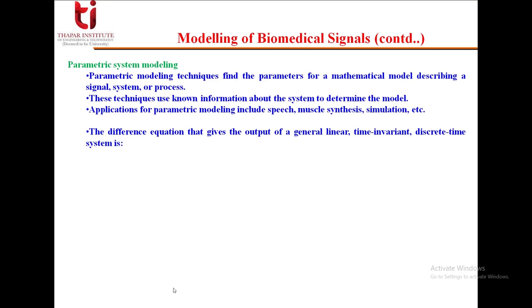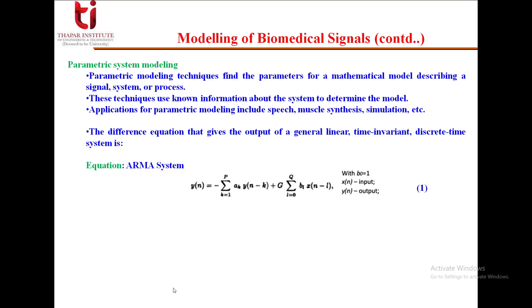The difference equation giving the output of a general linear time-invariant discrete-time system is, for example, an ARMA (auto-regressive moving average) system. The output y(n) is computed by the present and past input samples x(n-l) for l running from 0 to q, with b_l as the filter coefficient and b_0 equal to 1, a gain factor g, and terms from past output values y(n-k) with filter coefficients a_k for k running from 1 to p. This is the total ARMA equation.